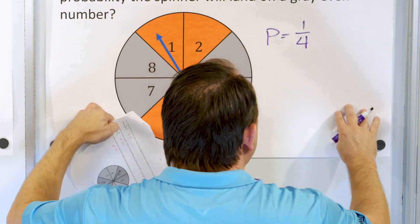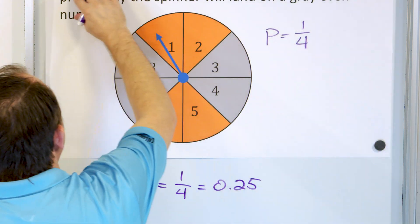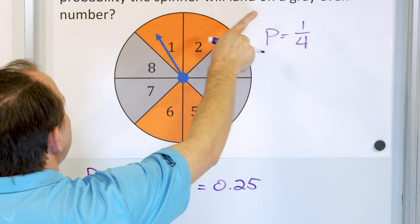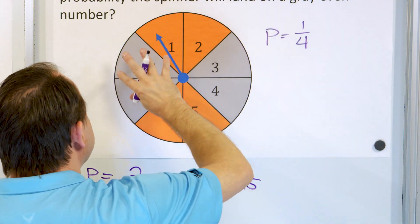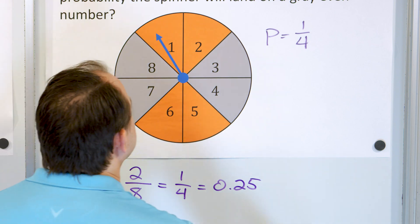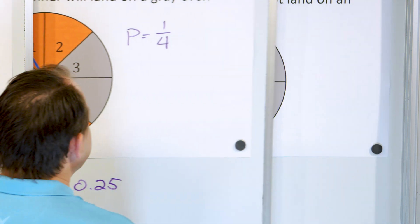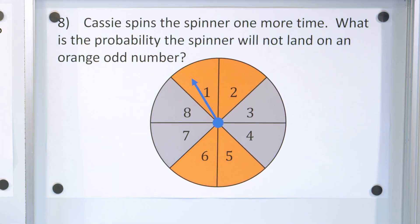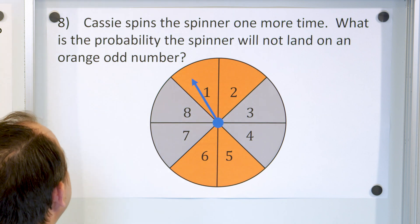So the probability is one fourth. One fourth of the time, or 25% of the time, I expect to land on a gray position that is also an even number. And here is our last problem — we spin the spinner one more time.